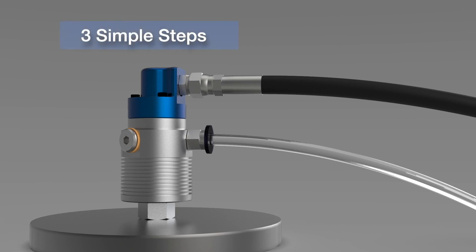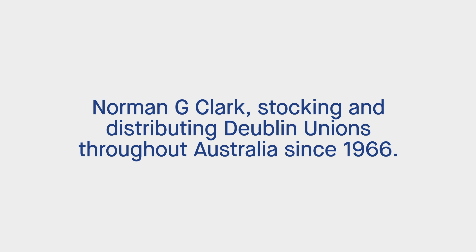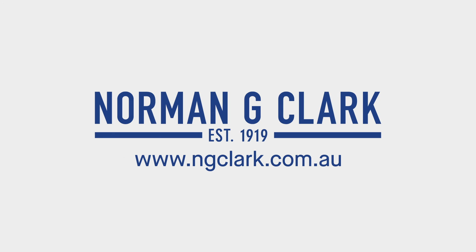Take it along with the other tips in this video, these three simple steps will ensure that your jubilant rotating union functions properly, providing the superior performance and reliability that makes jubilant an industry leader. Norman G Clark have been stocking and distributing jubilant unions throughout Australia since 1966. For more information, visit us online or contact a Norman G Clark representative.